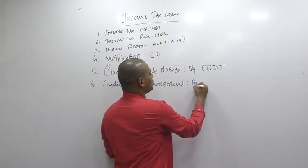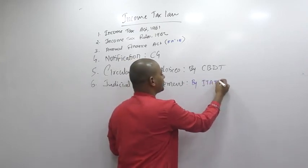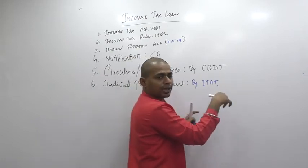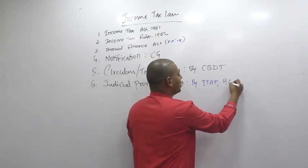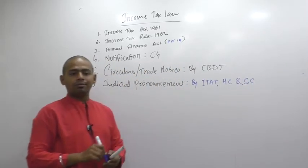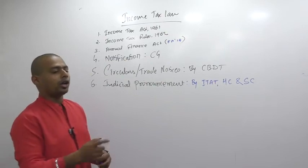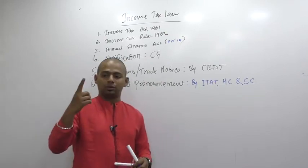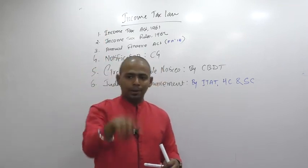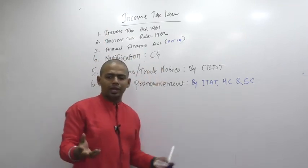Who will issue case law? So there are two or three authorities. ITAT - Income Tax Appellate Tribunal, then High Court, and then how many Supreme Courts we have? One. Therefore it is Supreme. Alternatively Supreme Court is known as Apex Court. Apex means supreme.